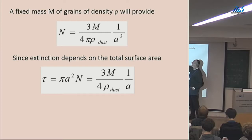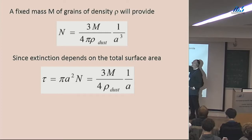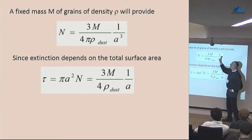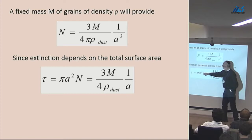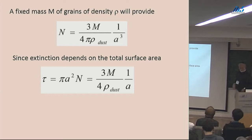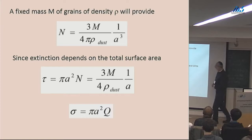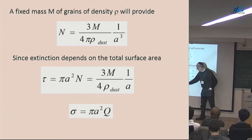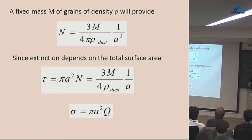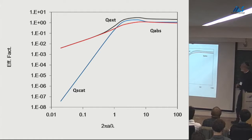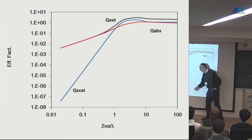If you have a mass of grains with density and radius, the number of grains determines the extinction — the optical depth of that mass of grains depends on the total surface area, so multiply by pi a squared. But as Dave pointed out, the cross-section of a grain is the geometric cross-section times some efficiency factor that depends on the ratio of grain size to wavelength of light. The factor 2 pi a over lambda is the circumference of the grain divided by the wavelength. There are three efficiency factors: for scattering, for absorption, and the sum of the two for extinction altogether.